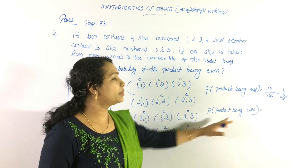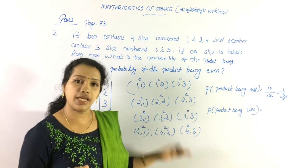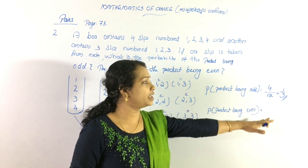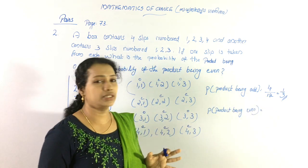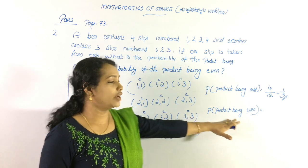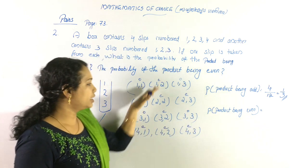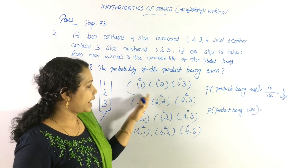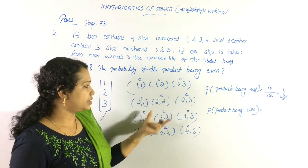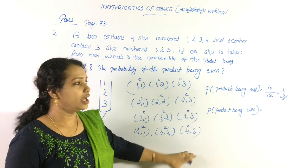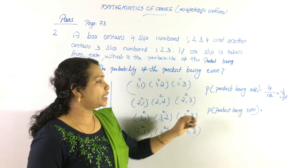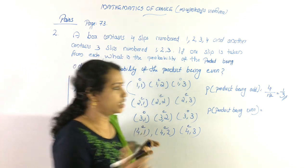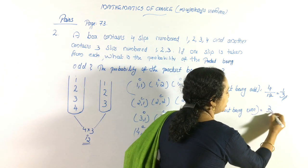The probability of the product being even is 1 minus 1 by 3, which equals 2 by 3.